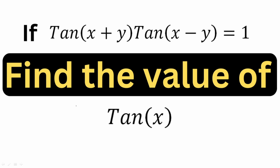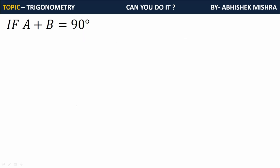If tan(x+y) · tan(x-y) is equal to 1, find the value of tan x. In order to solve this question, we have to understand a simple concept: if A and B are two acute angles and A plus B is 90 degrees, both less than 90 degrees.